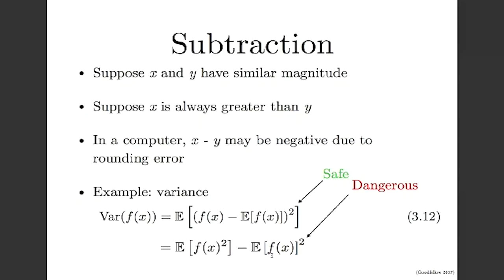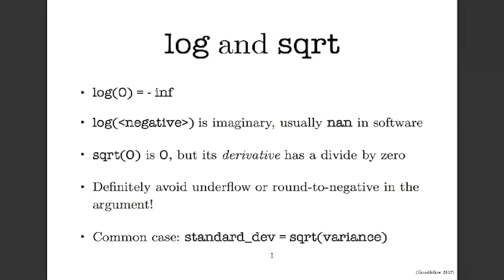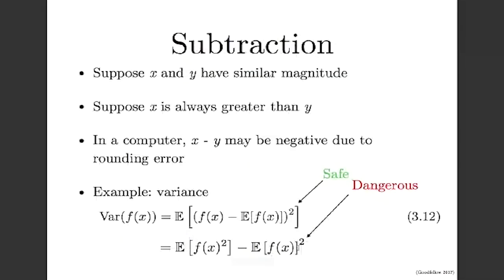Logarithm and square root require care. The logarithm of zero is negative infinity, and the logarithm of a negative number is imaginary (usually treated as NaN in NumPy). Square root of zero is fine, but the derivative of square root has a divide-by-zero at x = 0. Avoid underflow or rounding to a negative value in the argument to log or square root. A common case: computing standard deviation as the square root of variance can hit trouble if variance is computed using the numerically unstable formula and rounds to a small negative number.